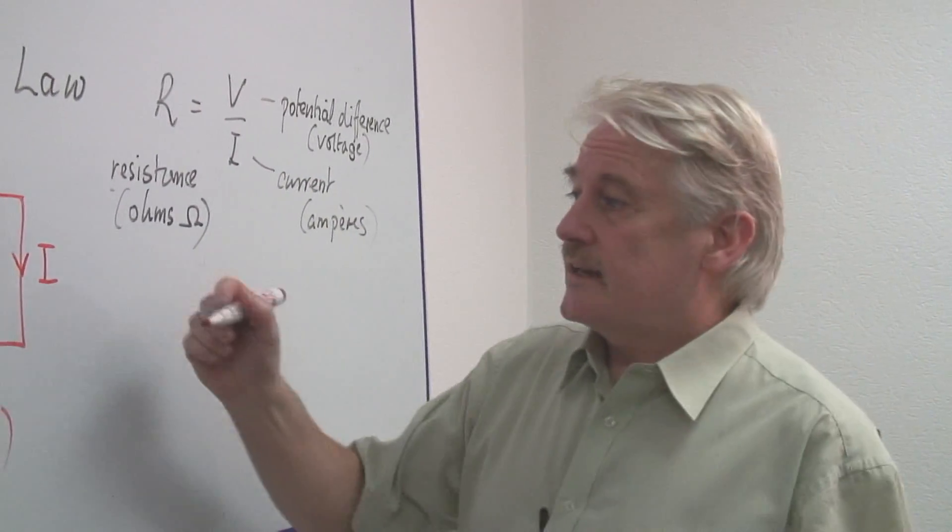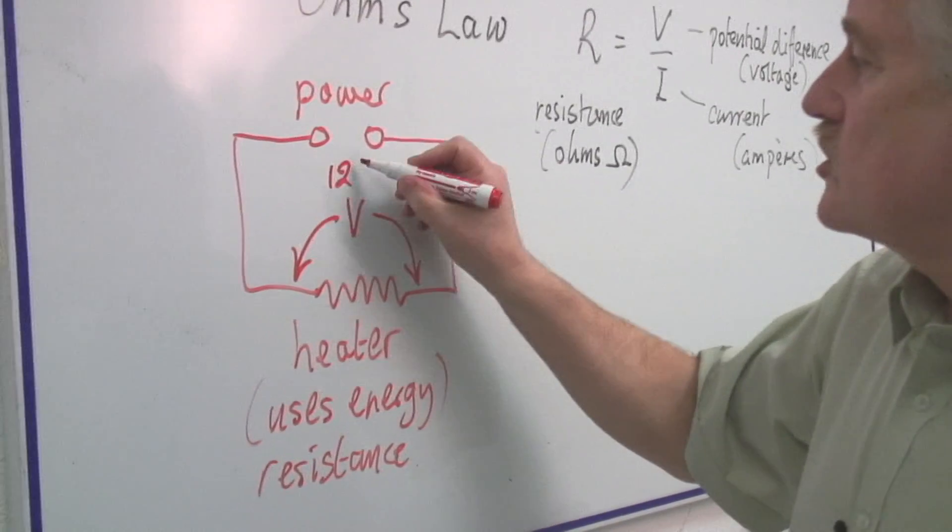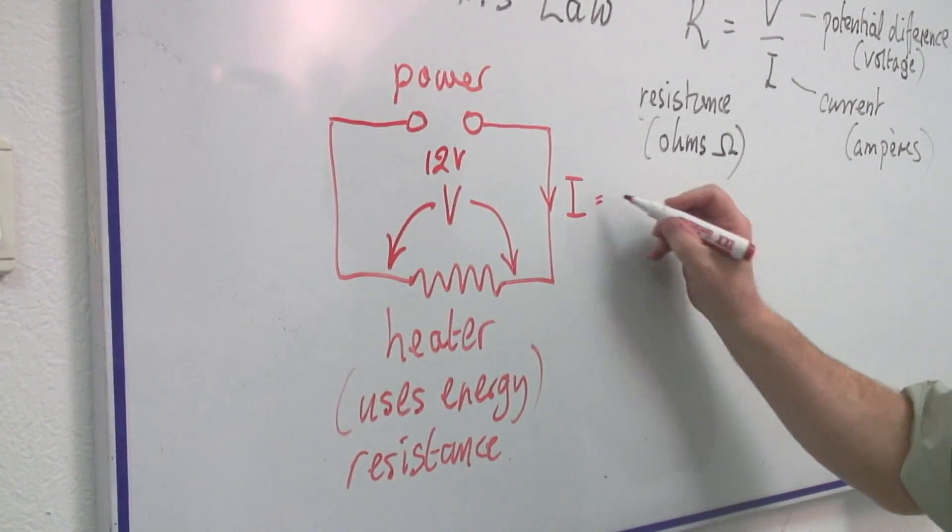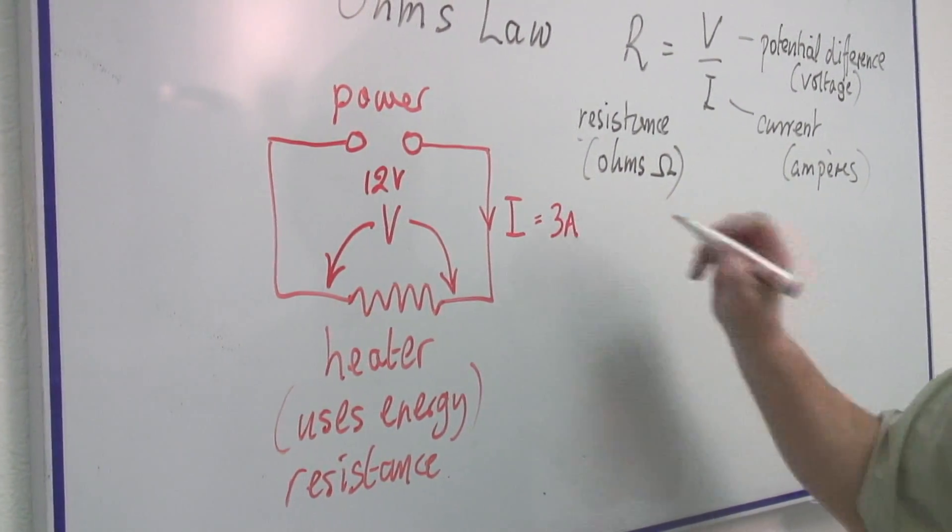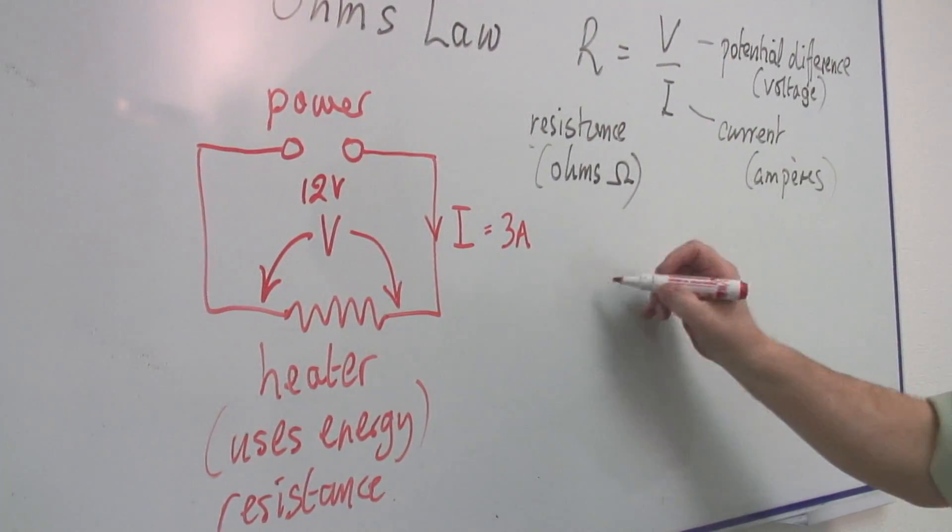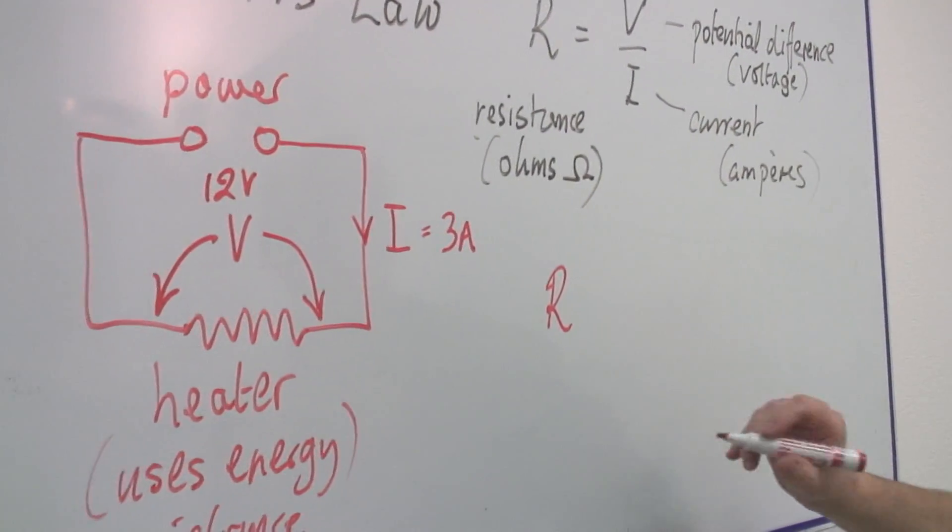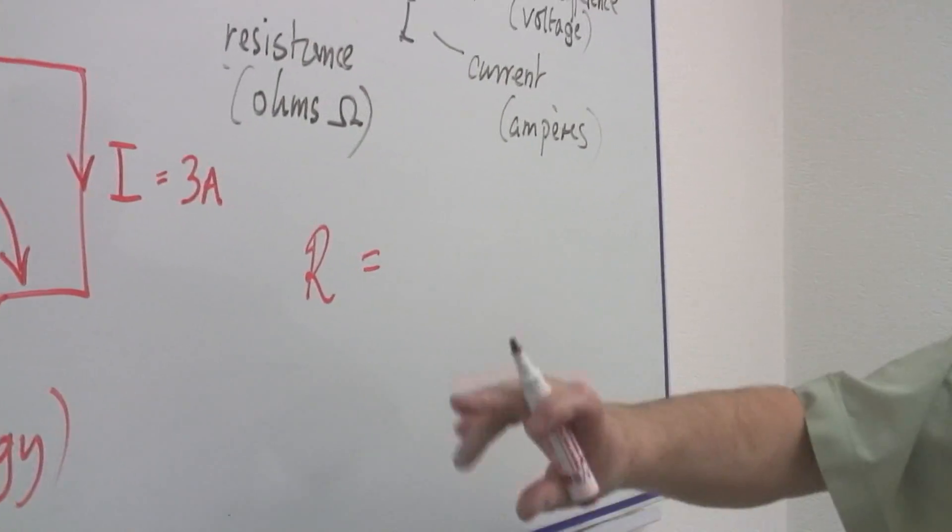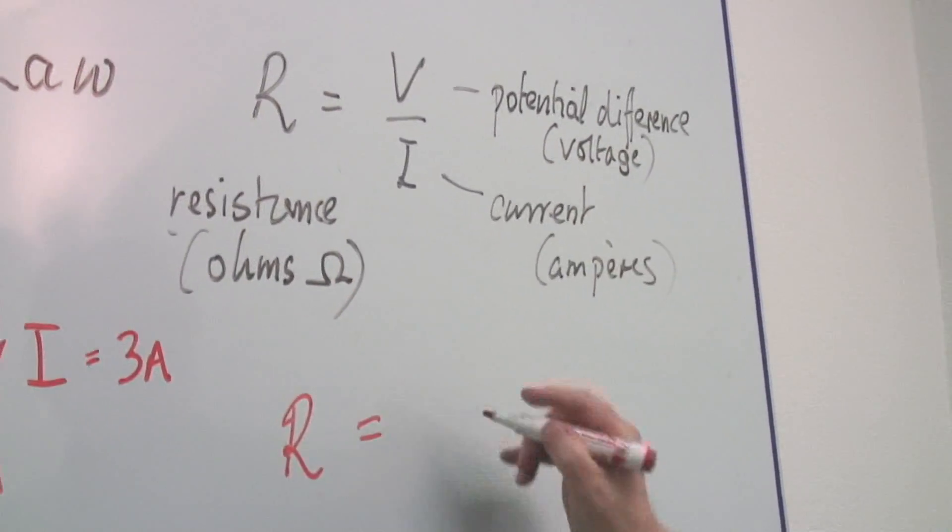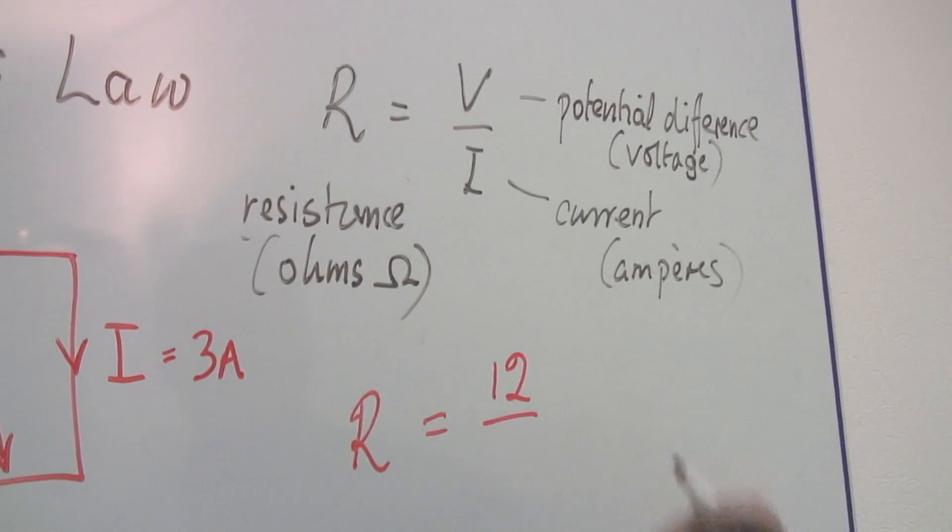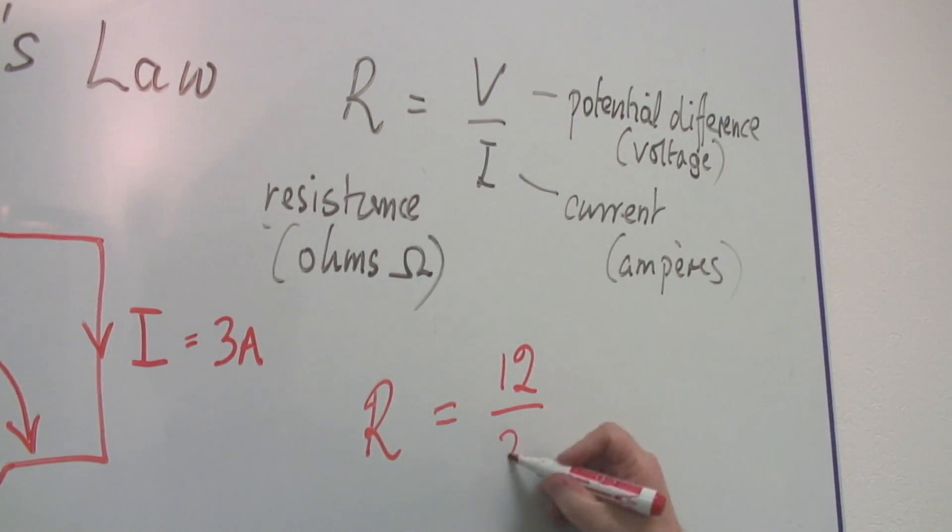For example, let's say that the voltage is 12 volts and the current is 3 amperes. Then we can simply substitute the resistance, R is equal to V, 12 volts divided by I, 3 amps,